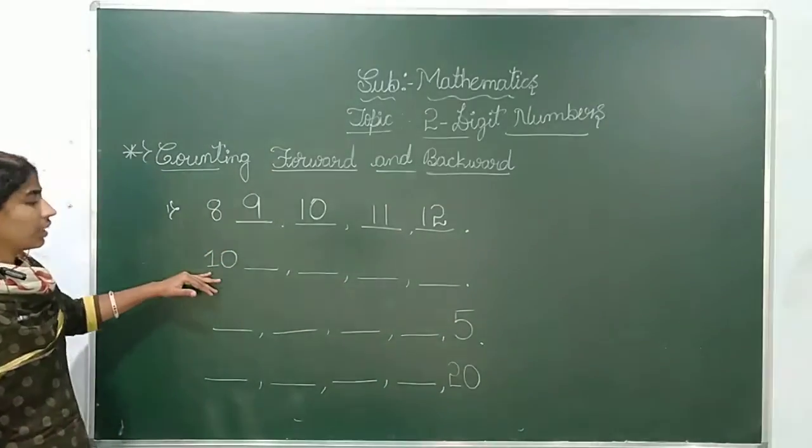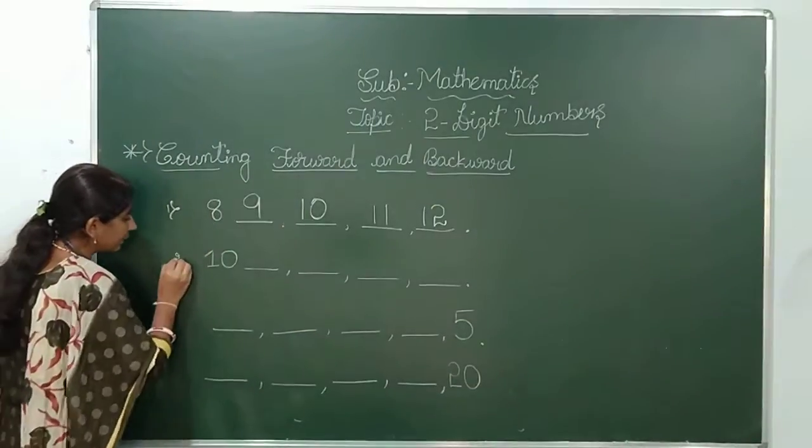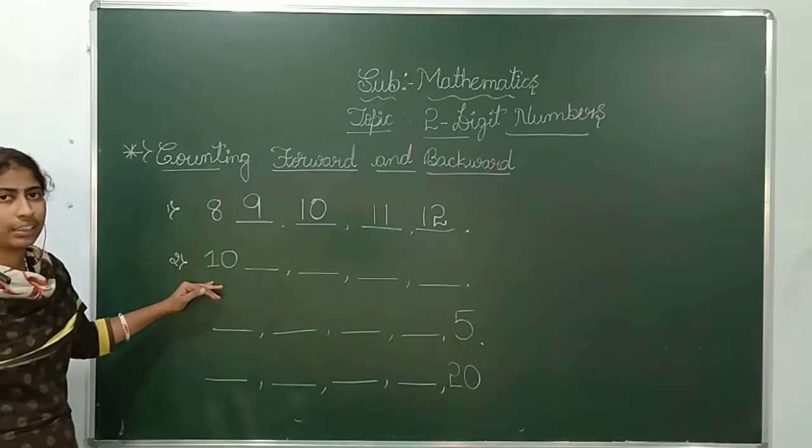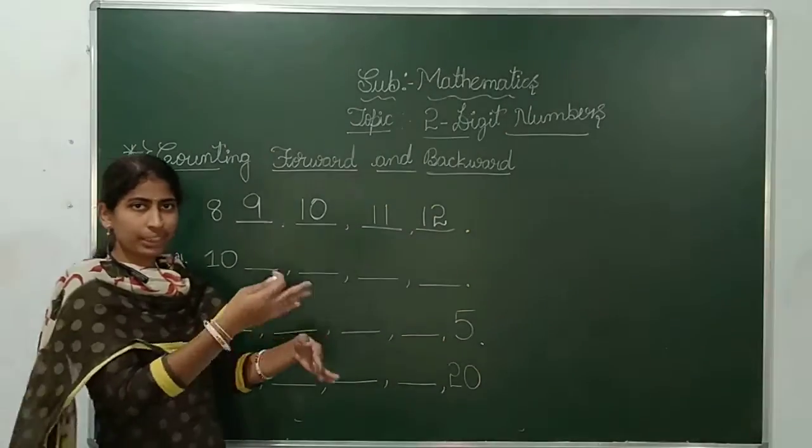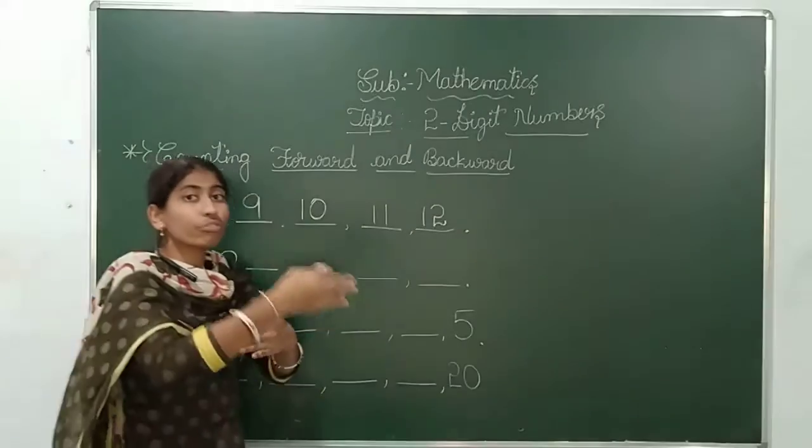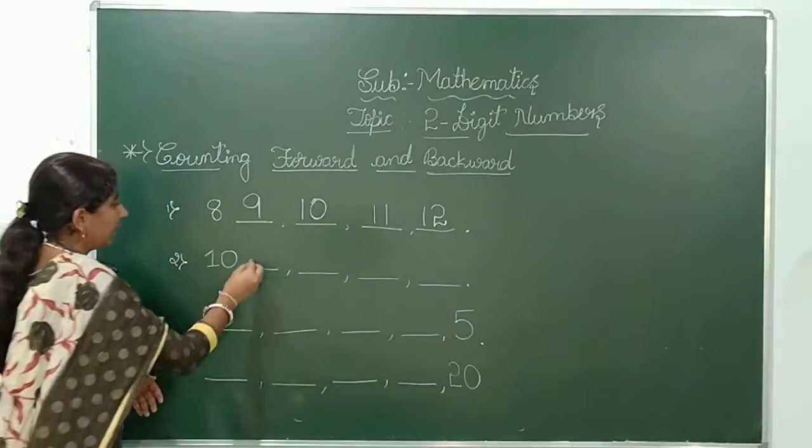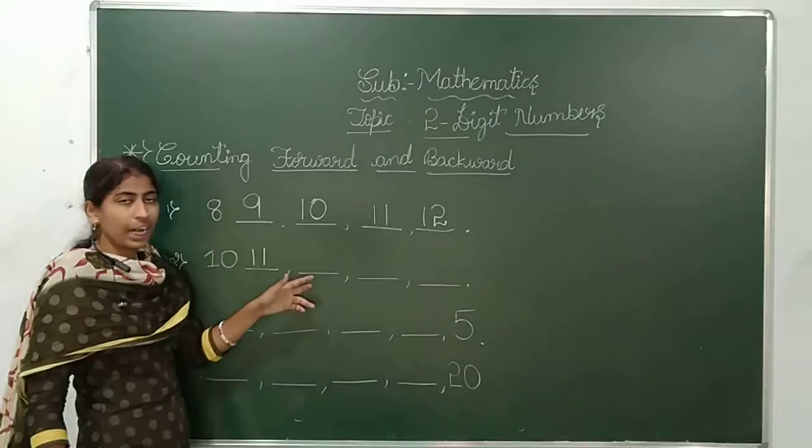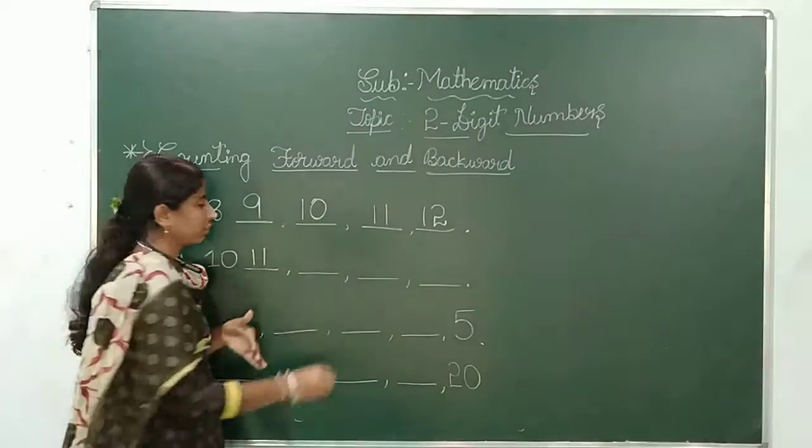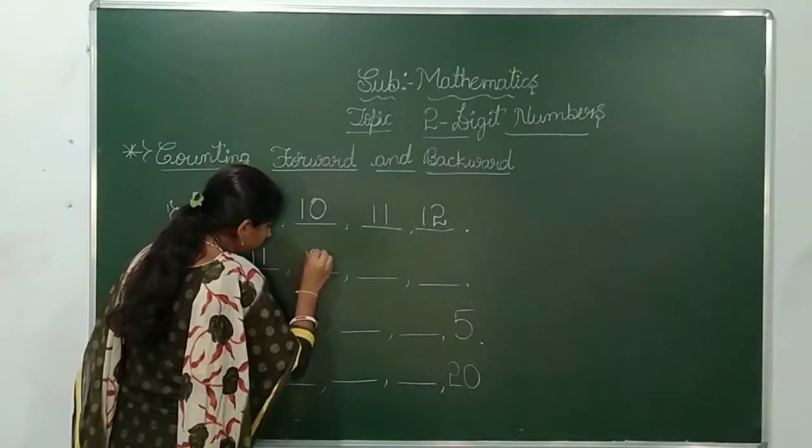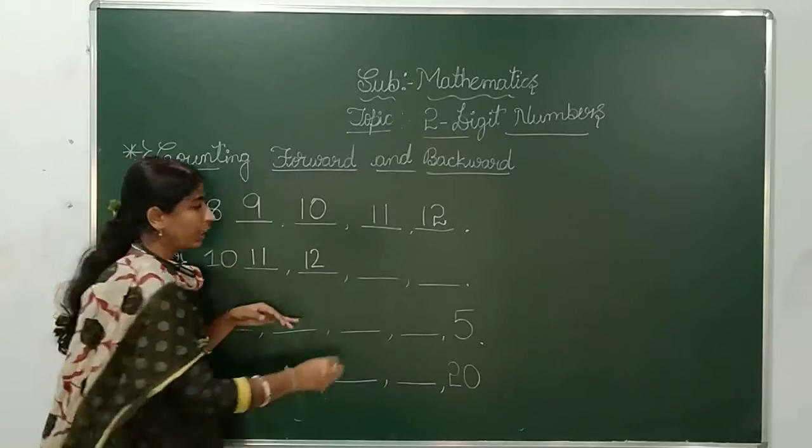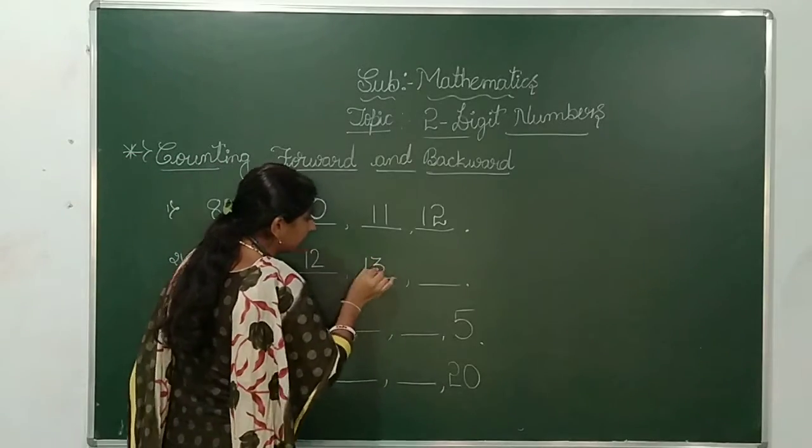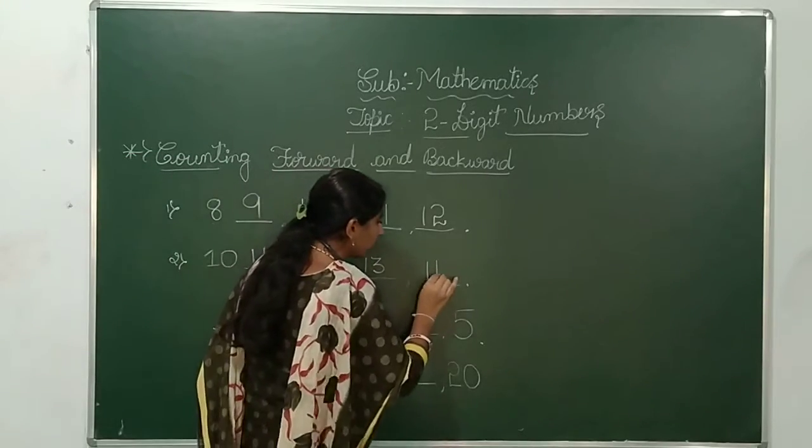Let us go to the 10. 10 forward number is? We should count forward. 11. And after the 11? 12. After the 12? 13. Next is 14.